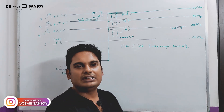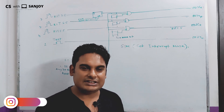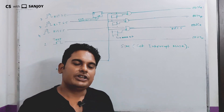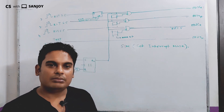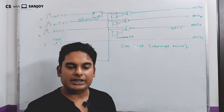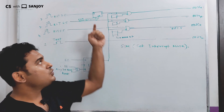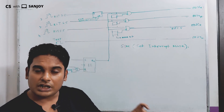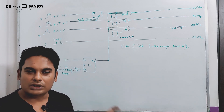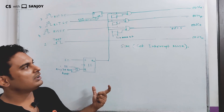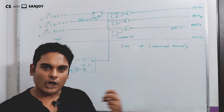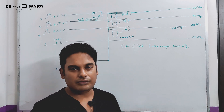This is called a Maskable Interrupt. So what do you do with the masking process? Masking has to be handled by the user — the programmer, the developer. The user needs to specify whether the interrupt will be blocked or the interrupt will be allowed.